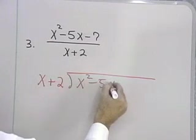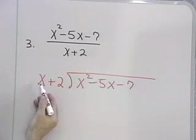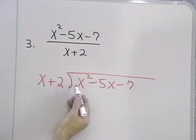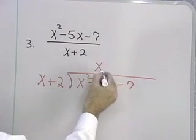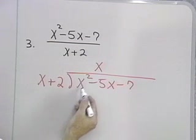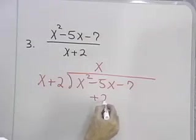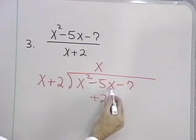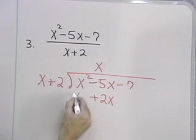We'll go through it once here, and then you can try some. I estimate by dividing x into x squared, that will be x, because x times x gives me x squared. Now, I multiply x times 2 is 2x, and I'll write that under the term it's similar to. x times x is x squared.